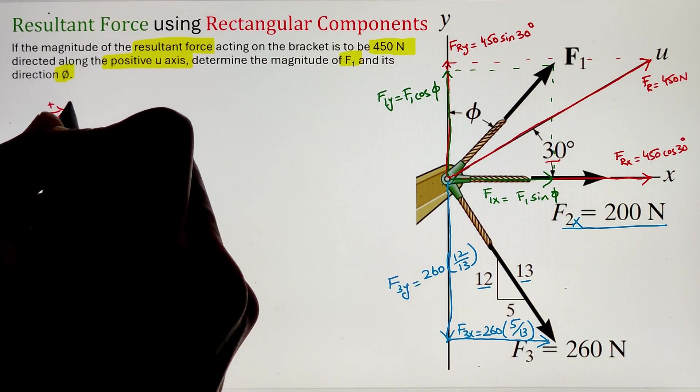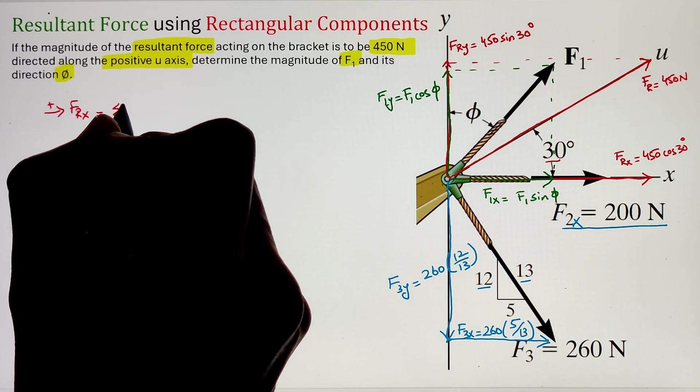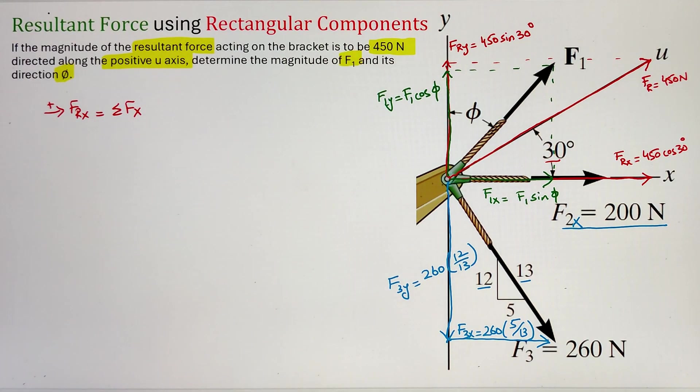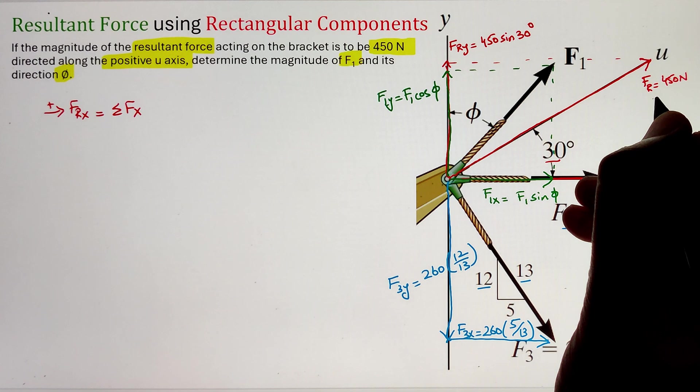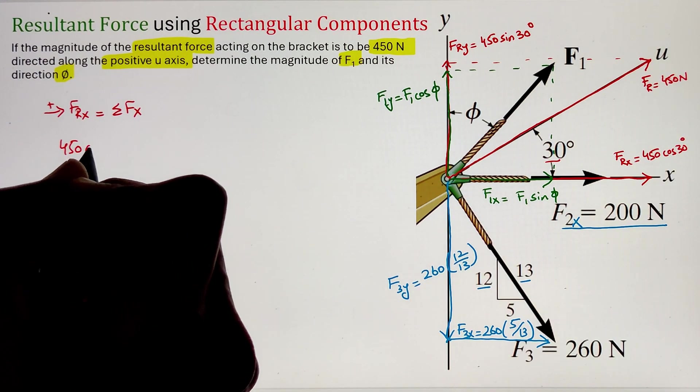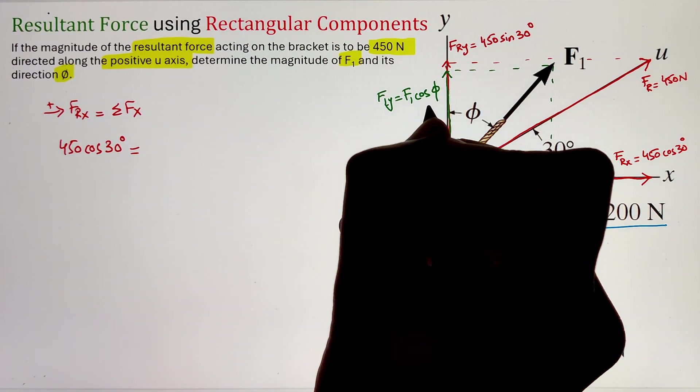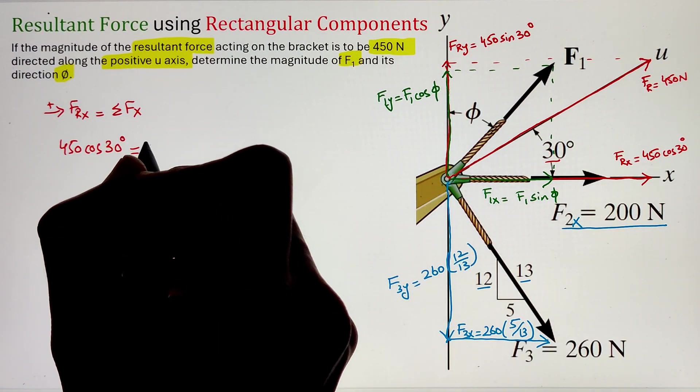One other way of looking at it is since 12 is parallel to the y-axis, it is utilized in the numerator while we are calculating our component along the y-axis. Whereas, 5 is parallel to the x-axis and we have utilized 5 in the numerator when we are calculating the F3x. Now, once we have all the components,